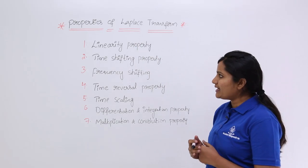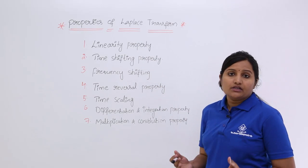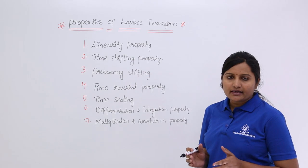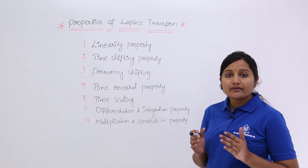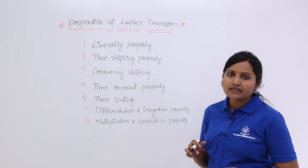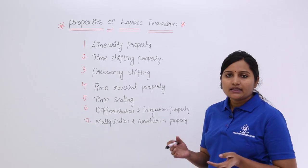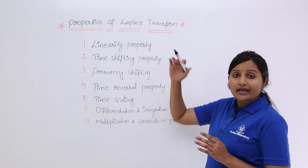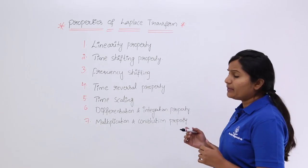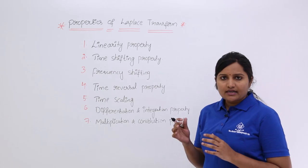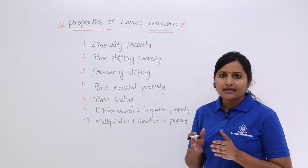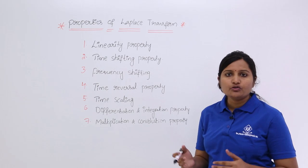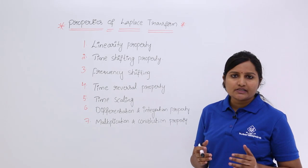The first property is the linearity property. It shows that if you are given two signals combined, then what is the transform, and if you are given two signals individually, then what is the combined transform. The combined transform is equivalent to the addition of individual transforms, which will be shown in the linearity property.